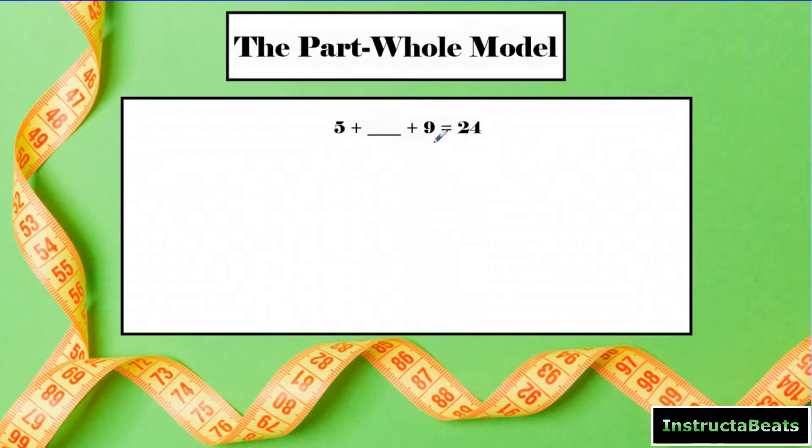So here we actually have the same exact addition equation as our last lesson, but last lesson we gave you all the parts and you're trying to find the whole. So here we now can label our whole here. We have our five, we're missing a part, and then we have our nine right here. We have part A, part B, and we're looking for part C. So my question mark is going to go right there.